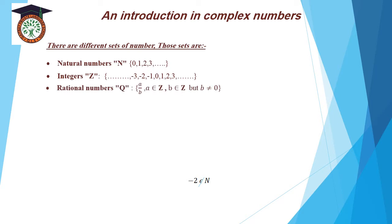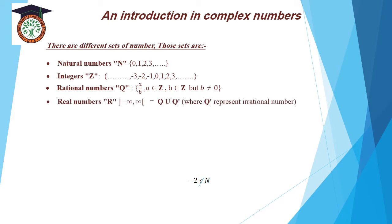Number 3, a rational number, equal a over b. The a belongs to Z, the b belongs to Z, but b is not equal to 0. And the real numbers are equal to all numbers, from negative infinity to infinity, or Q union Q-dash.